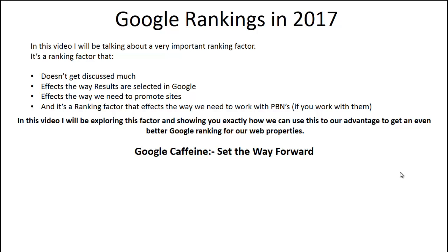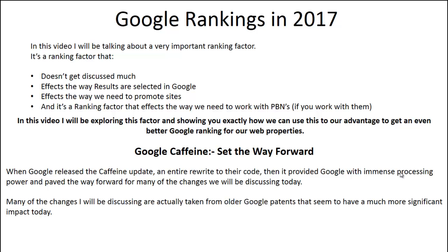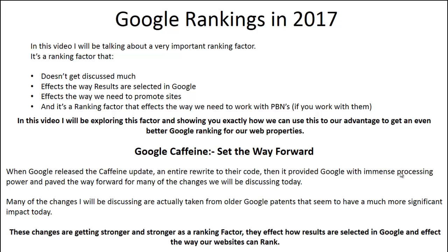To start with, I need to speak about the Google Caffeine Update, which set the way forward for Google. When Google released the Caffeine Update — an entire rewrite to their code — it provided Google with immense processing power and paved the way forward for many of the changes and ranking factors I'm going to be discussing today. Many of these changes are taken from older Google patents that seem to have a much more significant impact today, especially after Caffeine was released. These changes are getting stronger and stronger as a ranking factor.